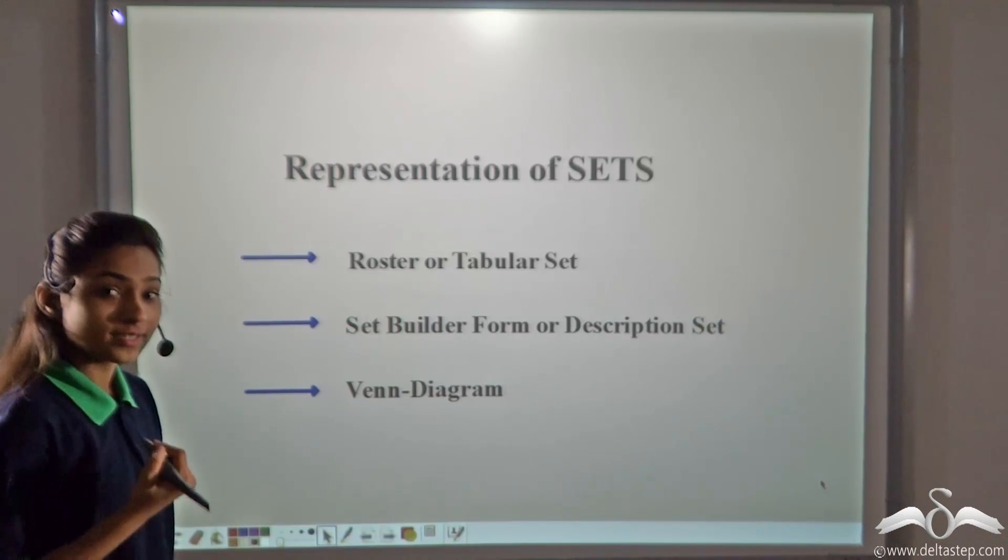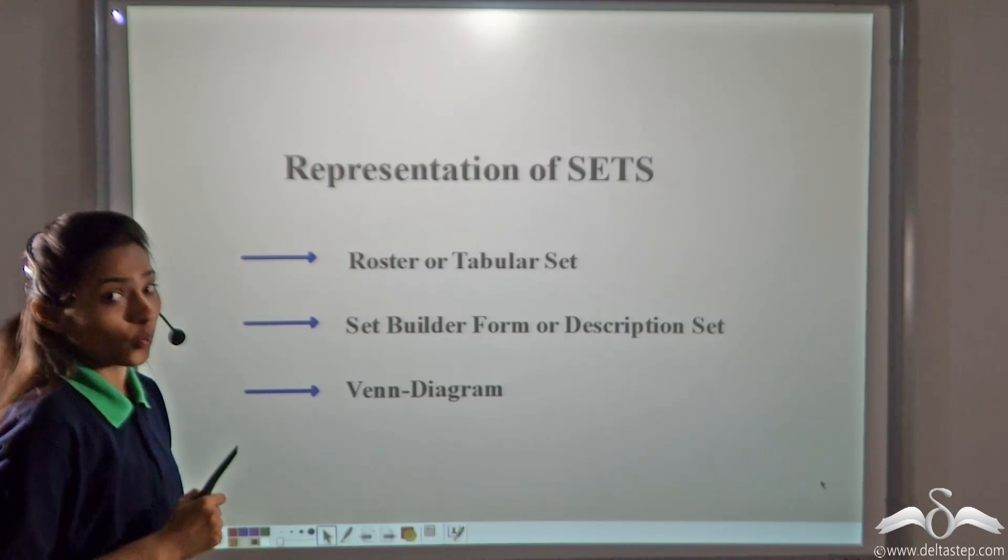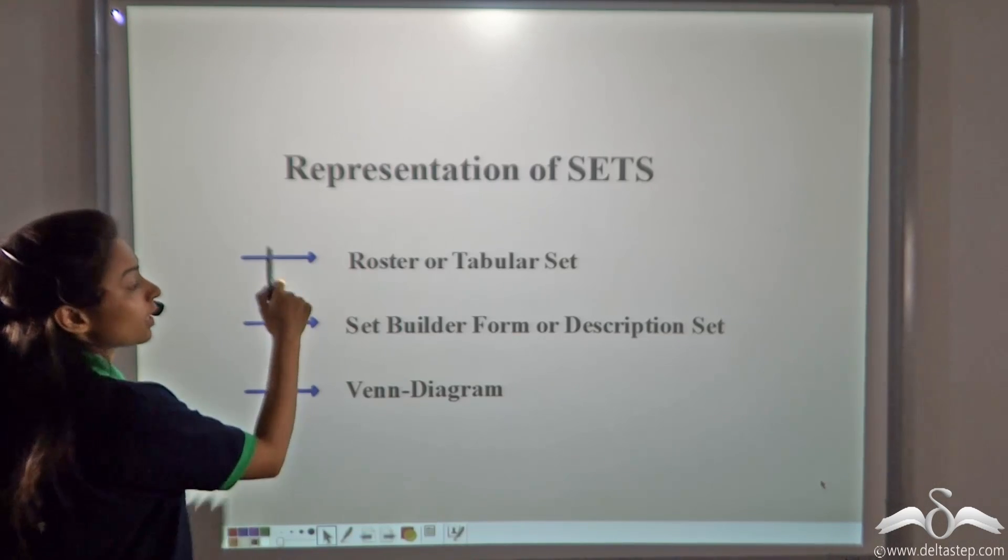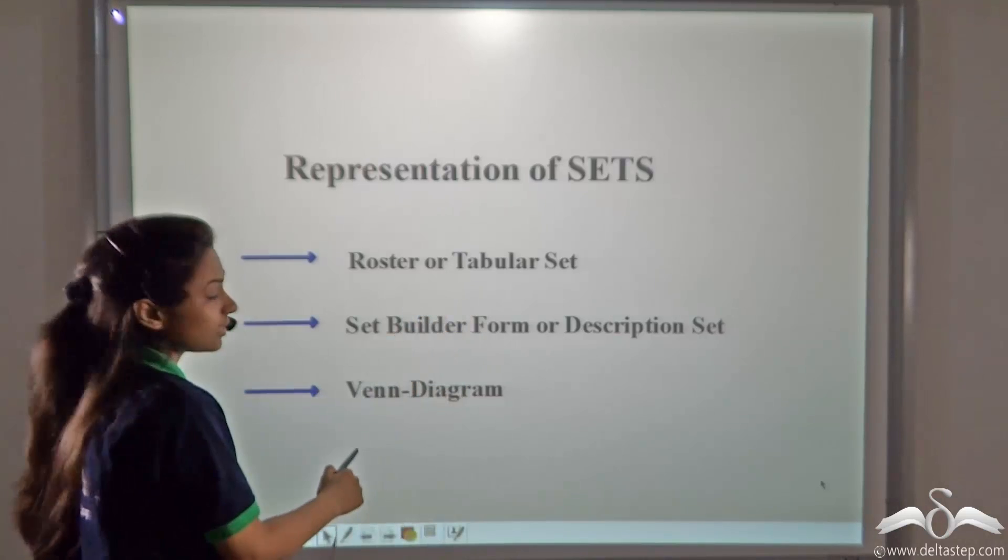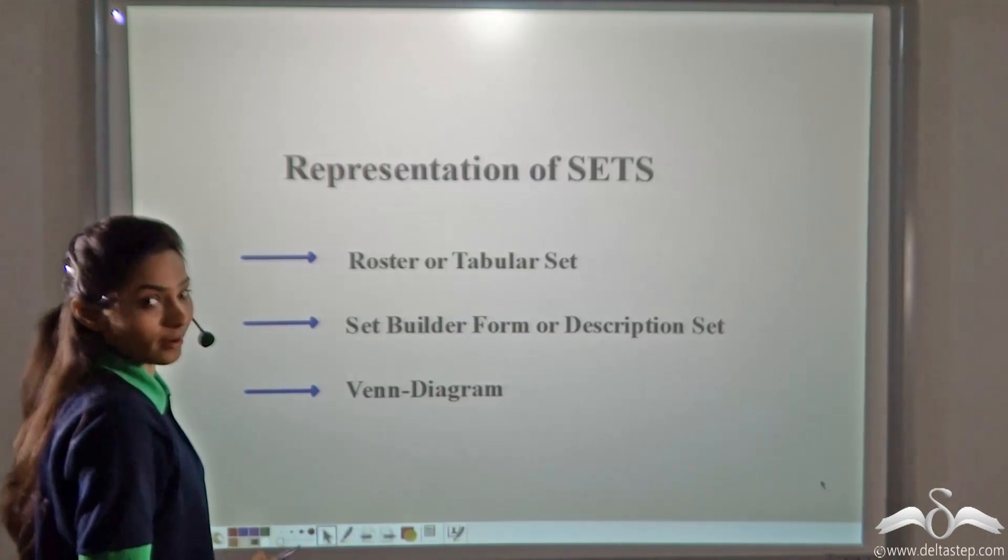Now you know how to write a set. But can you write the set in only one way? No. There are three ways to represent a set: the roster or tabular set, set builder form or description set, and a Venn diagram.